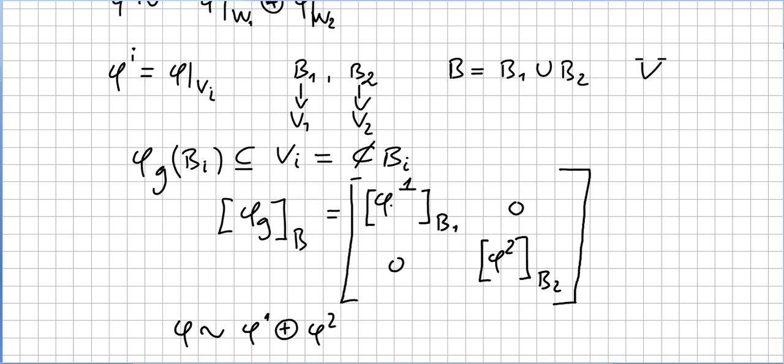Where this first sub-representation will be written as a matrix. So it is a block matrix. Here will be a matrix written with the basis B1, zero, zero, and here the second sub-representation written with the basis B2.